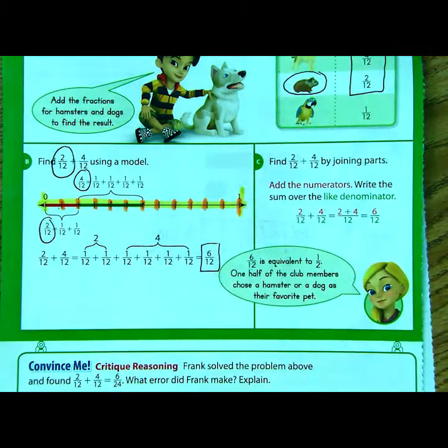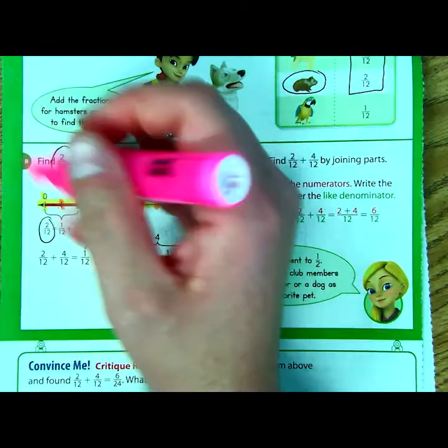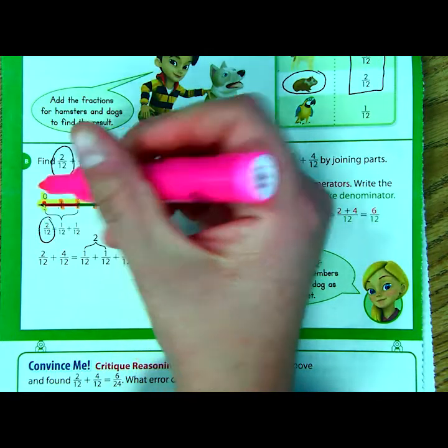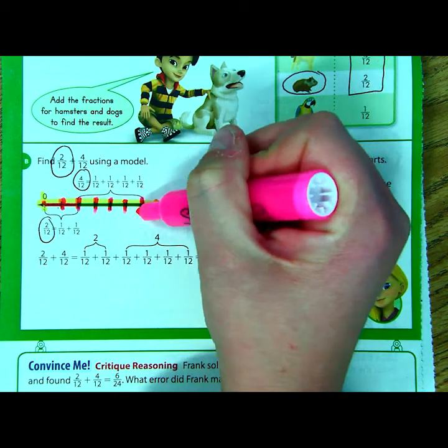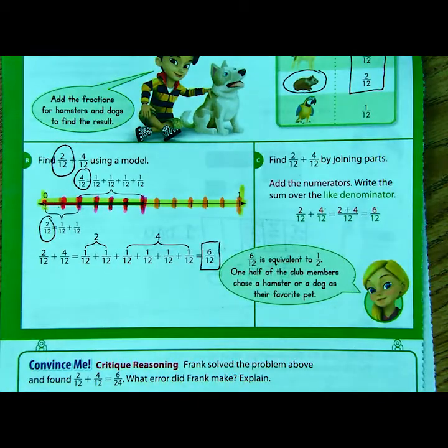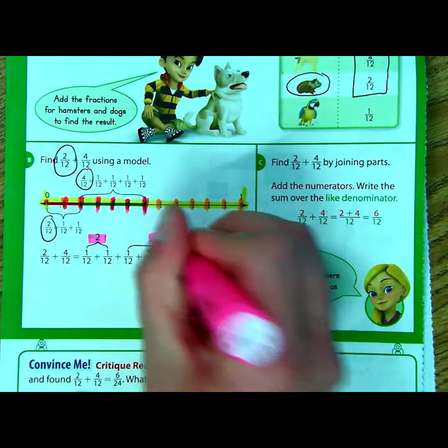Meaning, if you were to start at the beginning of your number line, you could count over, starting here on zero, one, two, three, four, five, and six twelfths. You get the same thing when you add your numerators of two plus four to get six.